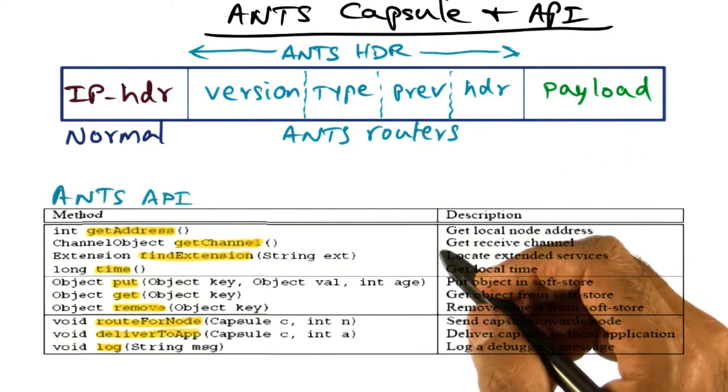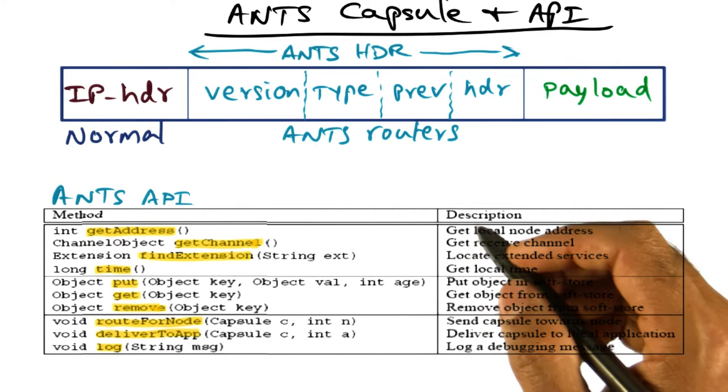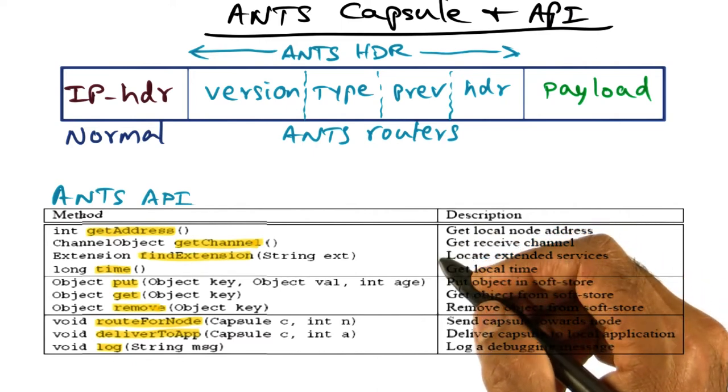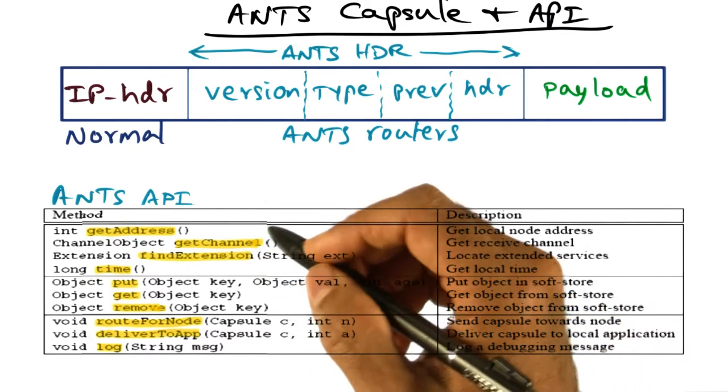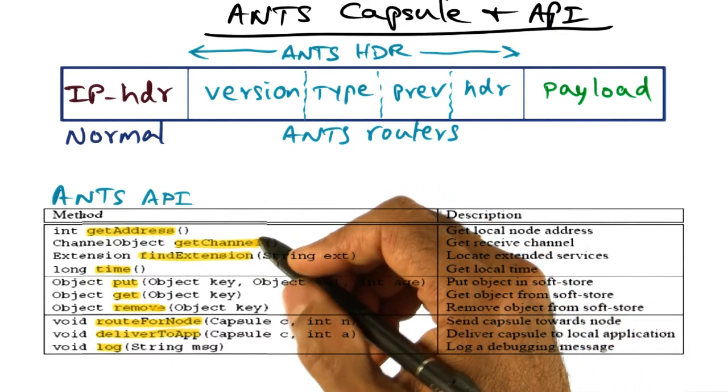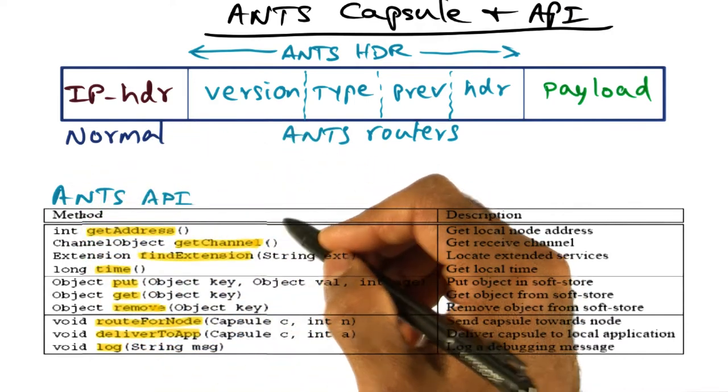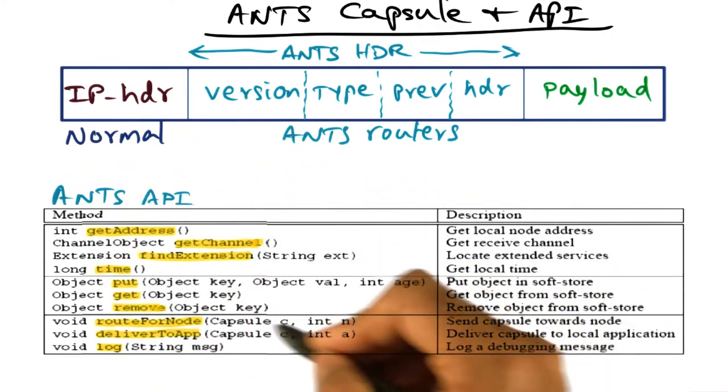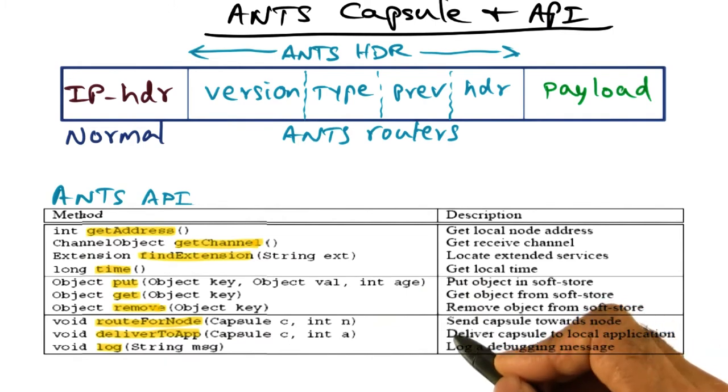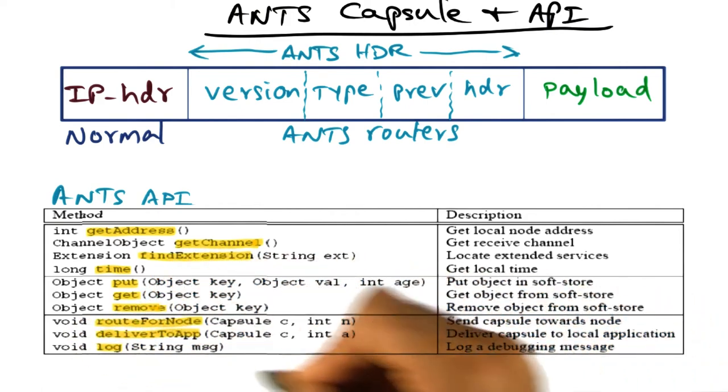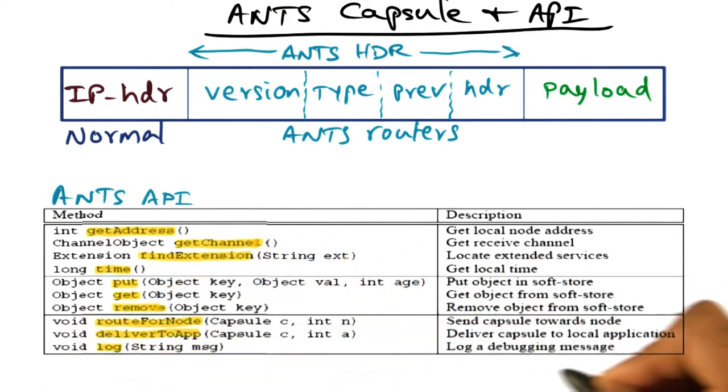The most important function that we want to accomplish using the ANTS toolkit is forwarding packets through the network intelligently. So routing the capsule is the most important function that needs to be done, and that's most of what the ANTS API is all about. And that part is contained right here, saying that route this packet in this manner and deliver the packet to an application. And this is the set of API calls that allows you to do routing of the capsule through the network.